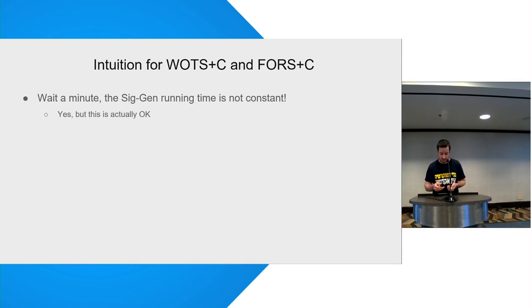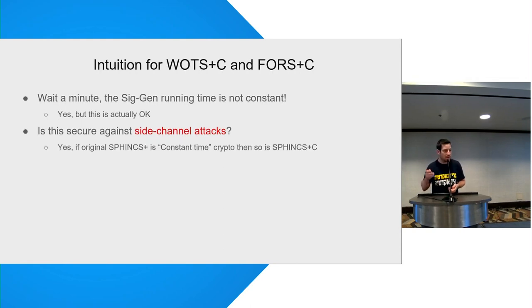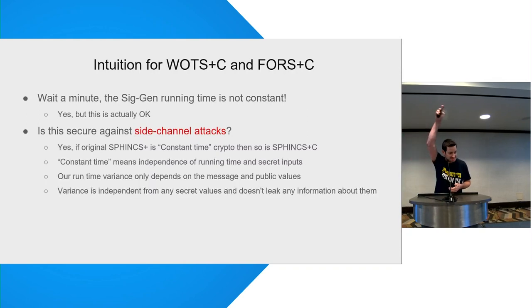And the first thing is the question, is it secure against side channels? This is not constant time. So the answer is yes. If the original SPHINCS+ is constant time, then our solution is secure. And the reason is that when we talk about constant time, the constant time is a very bad term that we use. This is not what we actually need. What we want to have for secure crypto is that constant time actually means that the running time might be not constant but needs to be completely independent of any secret values.